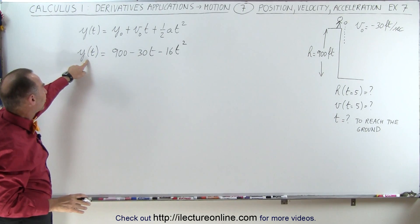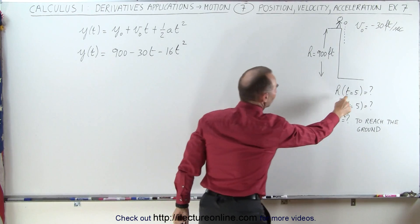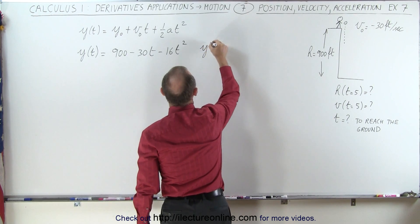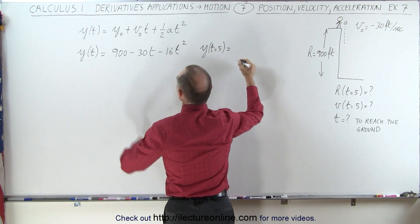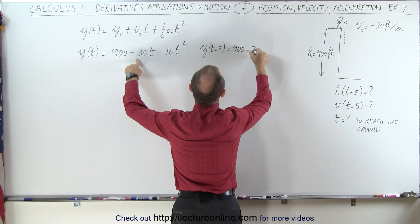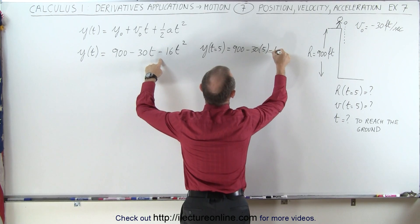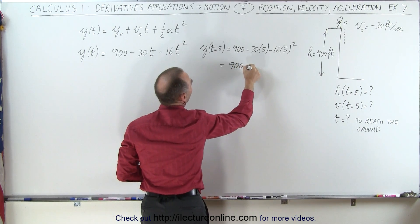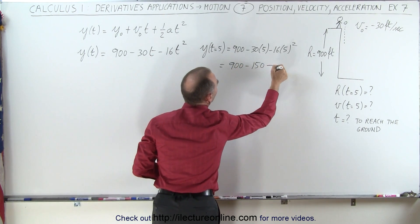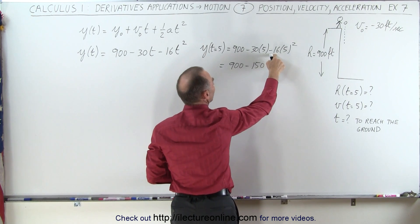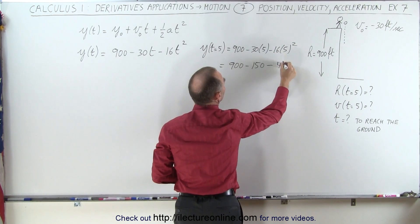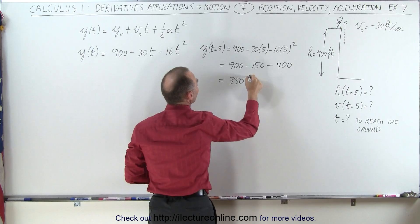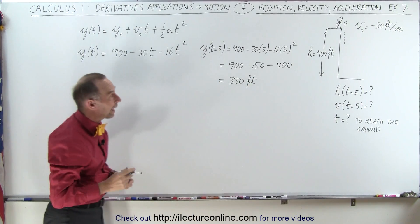Since we now have position as a function of time, we can answer the first question. The height as a function of time is the same as the position, so y when t equals 5 is equal to 900 minus 30 times 5 minus 16 times 5 squared. This equals 900 minus 150 minus 400, which gives 350 feet above the ground after 5 seconds.